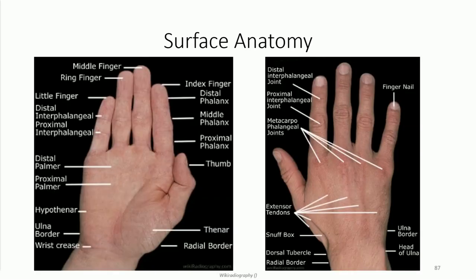We mentioned a number of surface anatomy structures during the lecture, and review them in this final slide. The three most important are the thenar and hypothenar eminences containing the associated musculature, and the anatomical snuff box just distal to the wrist. Also note the fleshy appearance of the webbing between the first and second digits. This contains both the abductor pollicis and the first dorsal interossei muscles, which adduct and abduct the index finger. Both muscles contract strongly when pinching an object between the first and second digits — the so-called key grip position — and can be palpated as they do so.